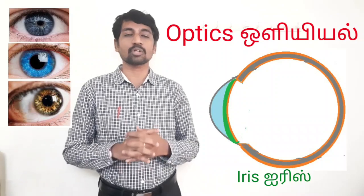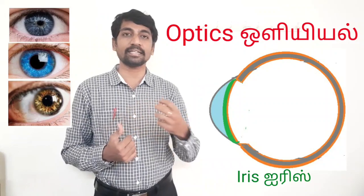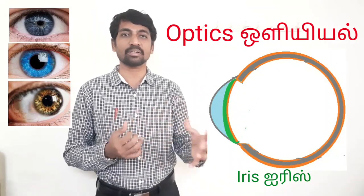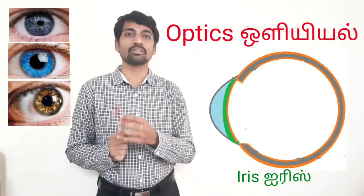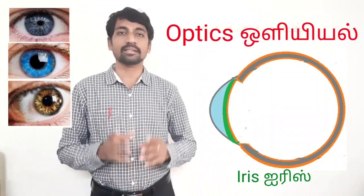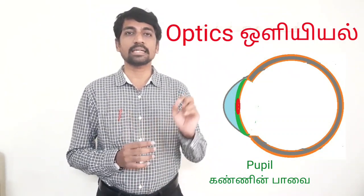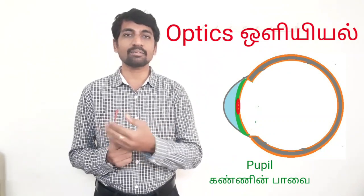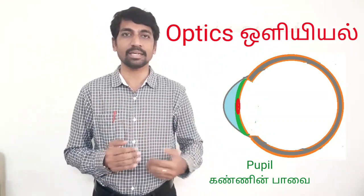The iris controls the amount of light entering the pupil — just like a camera controls the amount of light. The pupil is the center part of the iris and is the path of light to the retina. Light passes through the pupil to reach the retina.